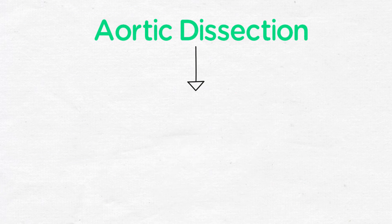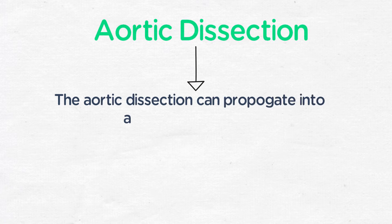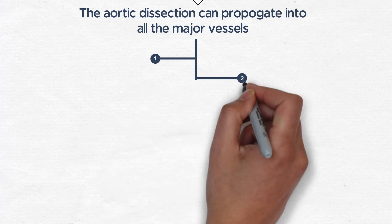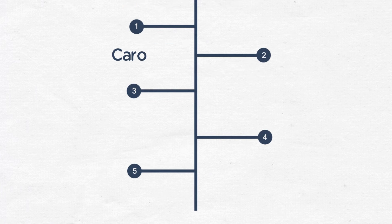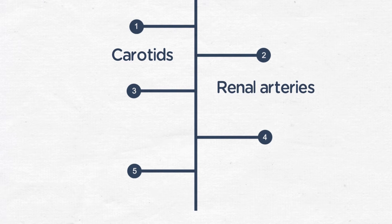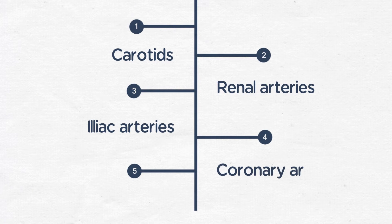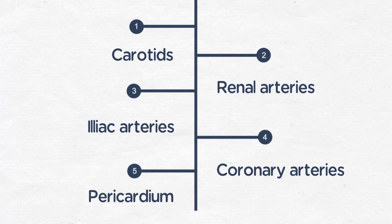The media will continue to peel apart longitudinally, and thus an aortic dissection can propagate not only down the aorta, but into all of the major vessels including the carotids, renal arteries, iliac arteries, coronary arteries, and even into the pericardium as the separation of the media layer propagates.